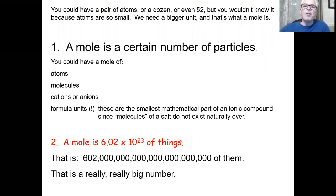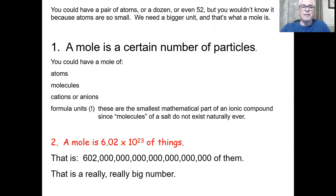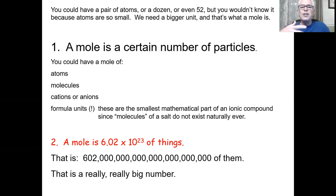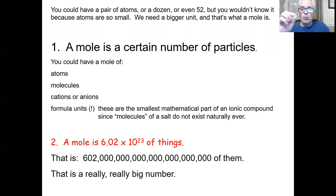A mole is a certain number of particles. You could have a mole of atoms, a mole of molecules of water, or a mole of cations plus anions to balance them out. You could even have a mole of formula units — the smallest mathematical concept of an ionic compound. A mole is 6.02 × 10²³ — that giant number.